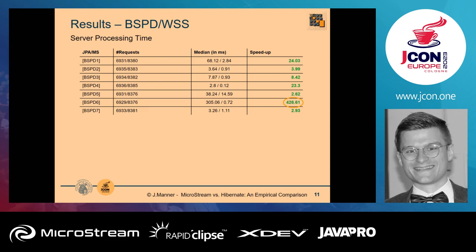For bookstore performance transaction number six, we experienced a server-side speedup of 400 times in favor of MicroStream. MicroStream did even better in another experiment shared later. For the other transactions, MicroStream was still significantly faster — tens to a hundred times — though not a few thousand times.